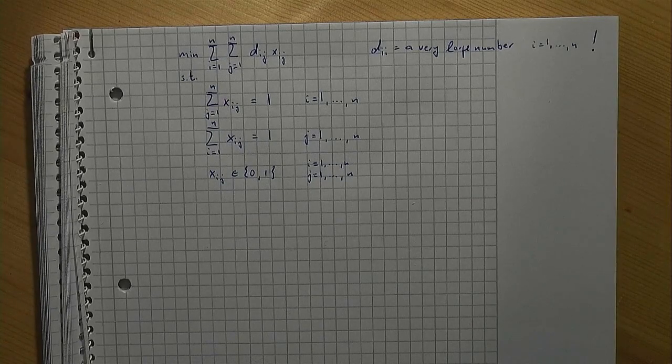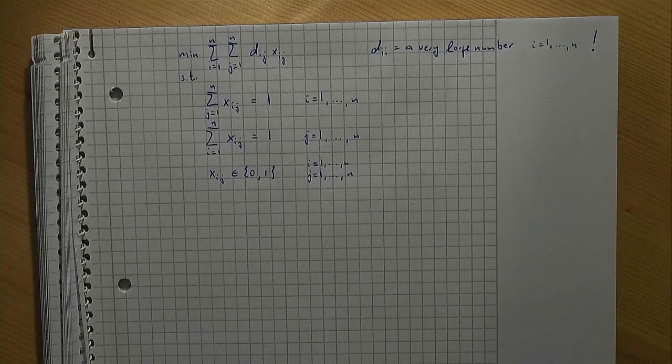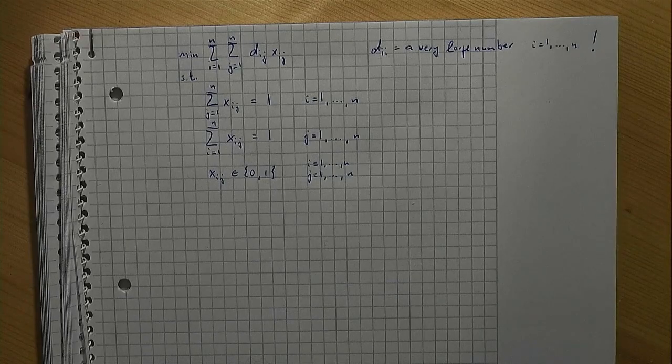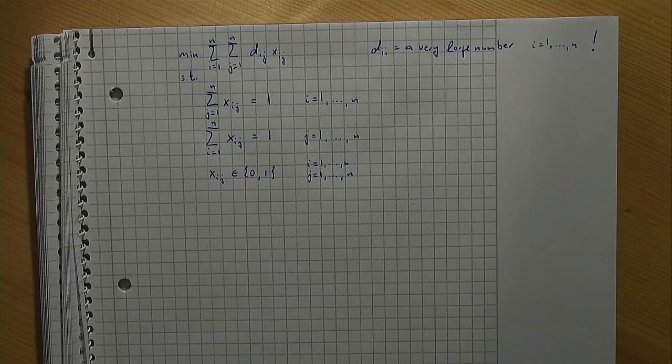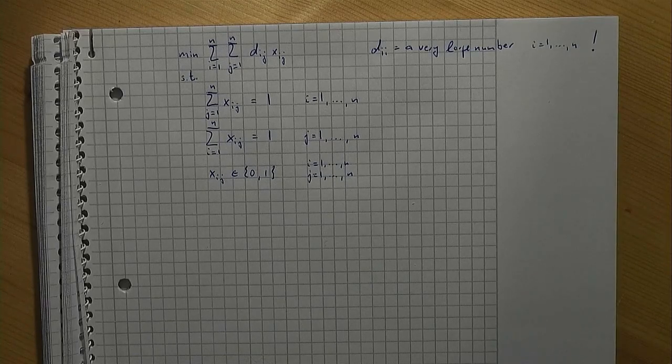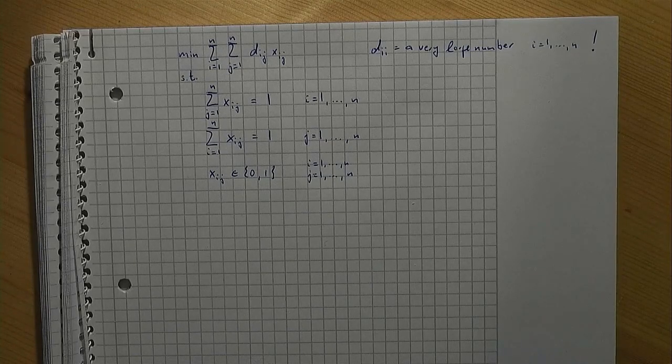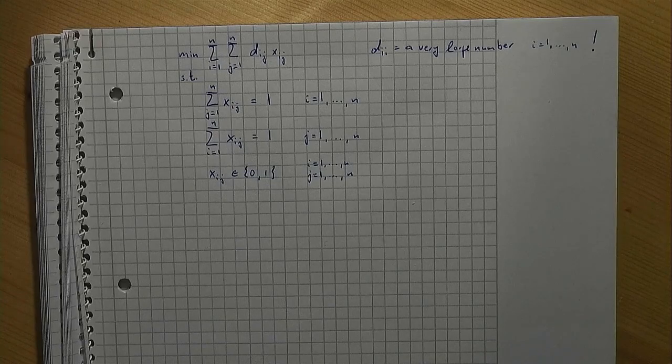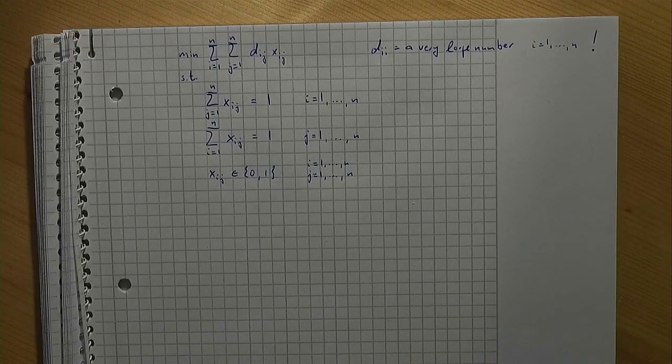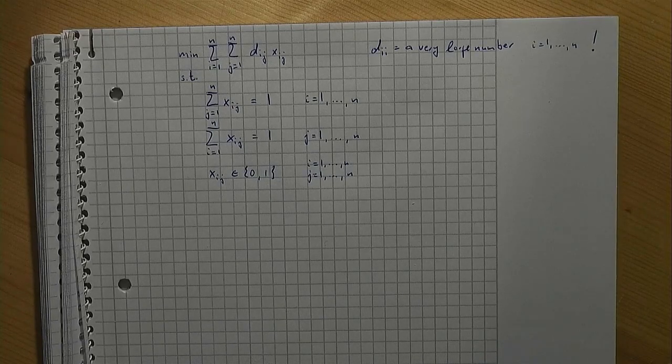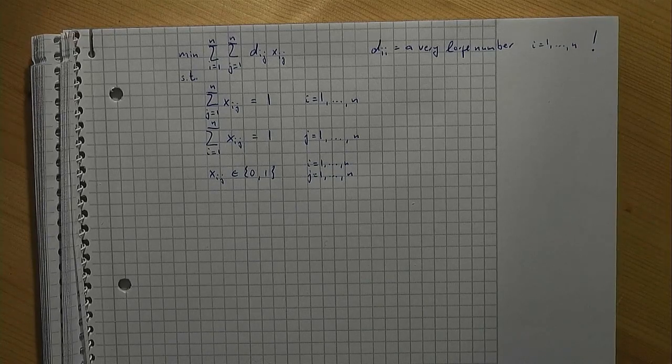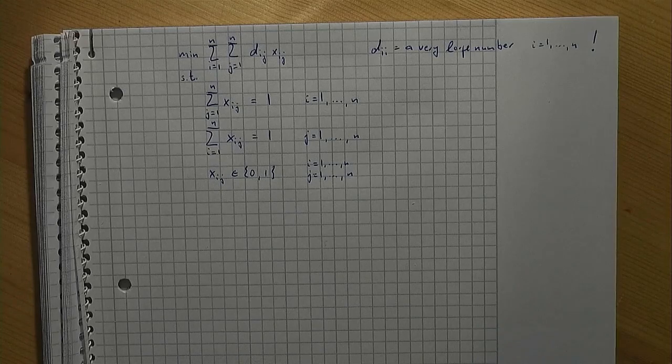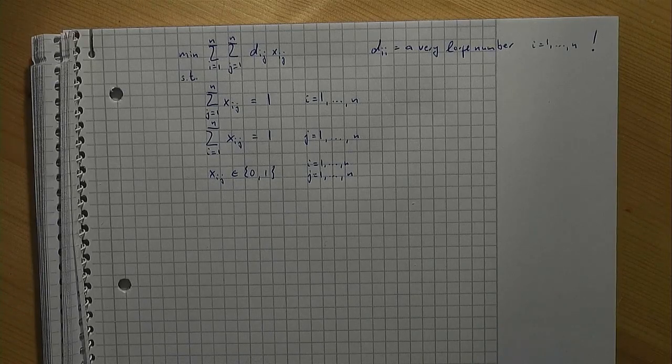If we had chosen dii equal to zero and dij greater than zero otherwise, an optimal solution would be to assign a 1 to all the xii variables and a zero to all the other x variables. This wouldn't be a round trip and shows us why choosing dii being a very large number is a clever idea. To put it in other words, choosing the parameters dii the way we did is part of a correct model formulation.